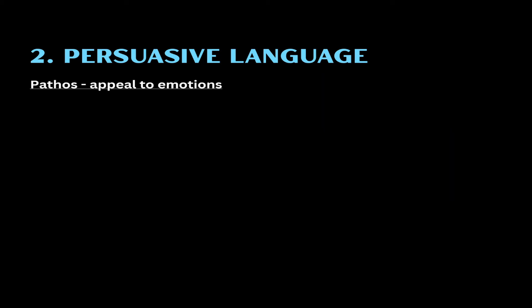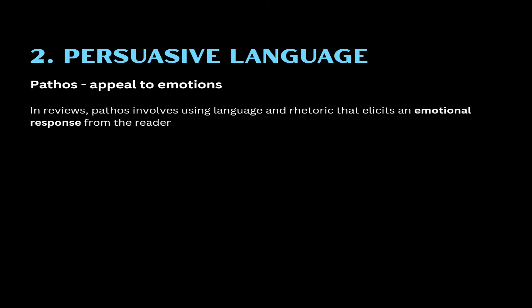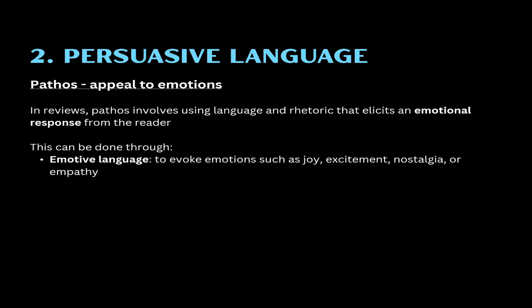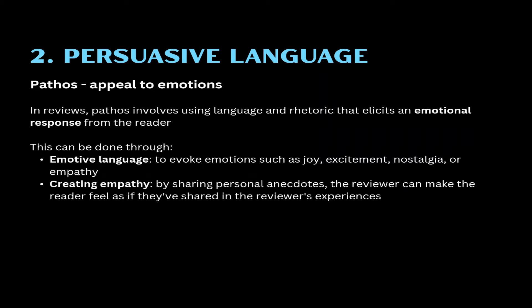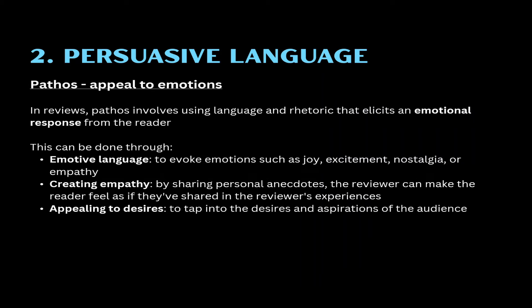The second appeal is appeal to emotions — pathos. Pathos means that you are trying to elicit an emotional response from the reader, making them feel a particular emotion while reading your review, such as compassion, fear, or excitement. This can be done through using emotive language — words with strong positive or negative connotations to evoke emotions such as joy, excitement, nostalgia, or empathy. When you share personal anecdotes about things that happened to you, you are making the reader feel like they're part of those experiences. You can also appeal to their desires — pathos can be used to tap into the desires and aspirations of the audience. For example, a product review may highlight how the item can fulfill the reader's dreams or desires.